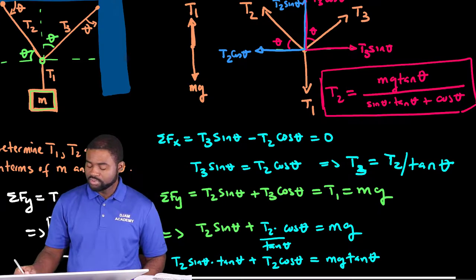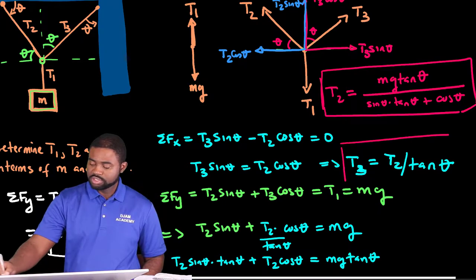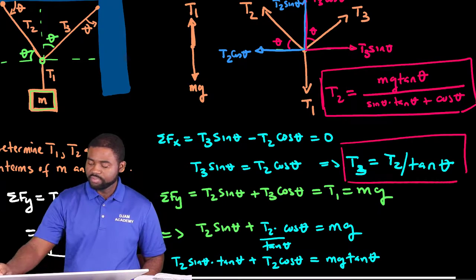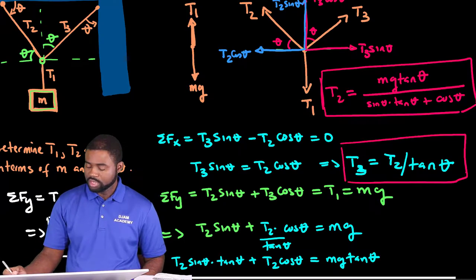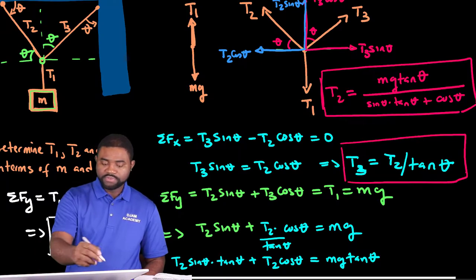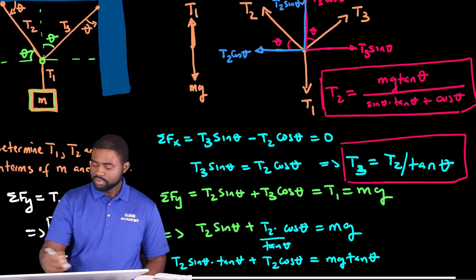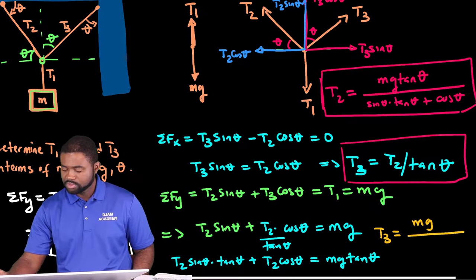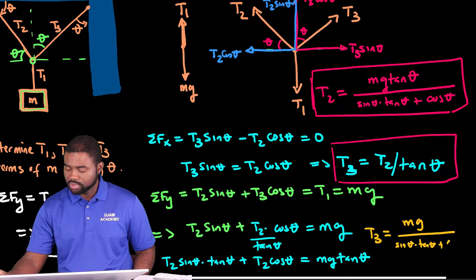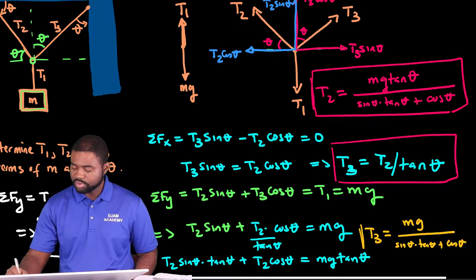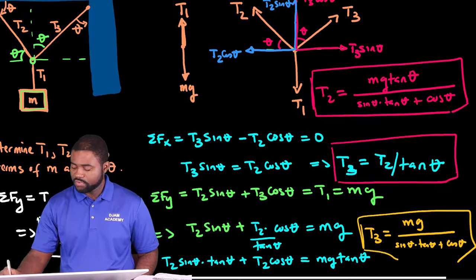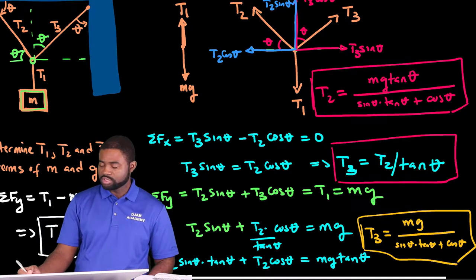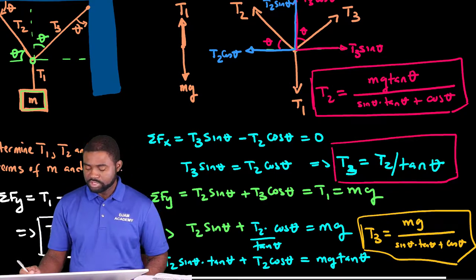Now, T3 is T2 divided by tan theta, that means that T3 will be equal to mg divided by sin theta tan theta plus cosine theta. So, this right here will give us the value for T3.